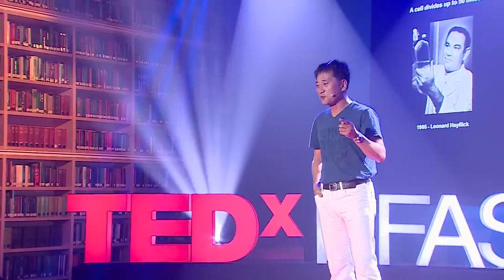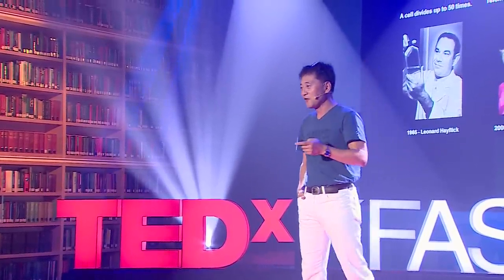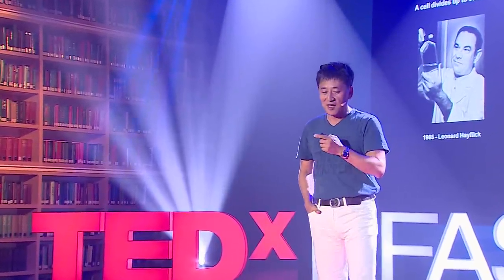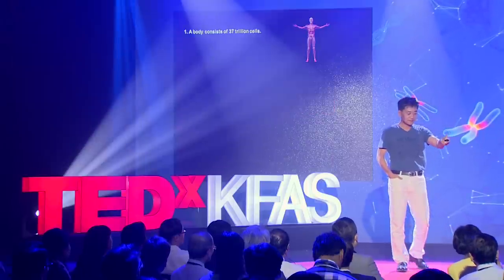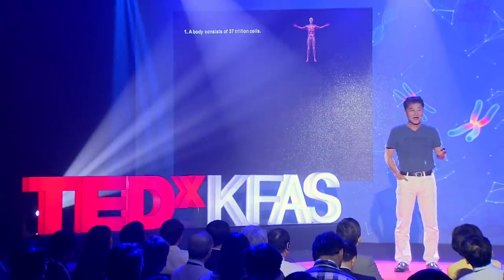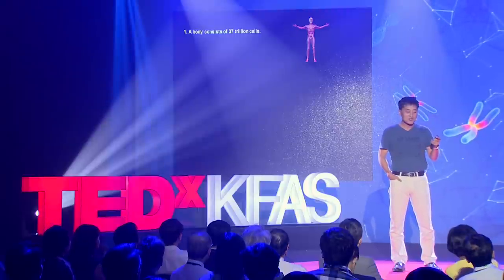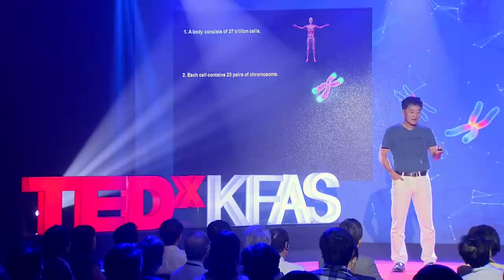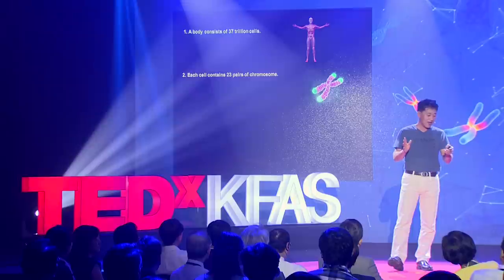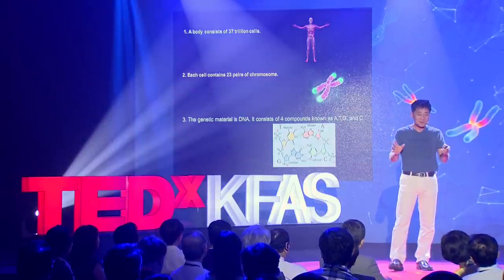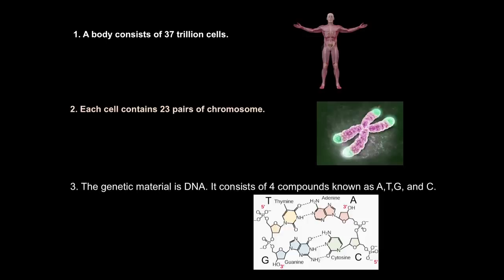So the challenge is that our physical limitations are already imposed — we cannot live forever. It's not going to happen unless we do something about it. To get to that discussion, let me remind you of three points from high school biology. Our body is made up of 37 trillion cells. Each cell contains 23 pairs of chromosomes, where genetic material is stored. And each DNA is made up of only four kinds of compounds — bases — A, T, G, and C.